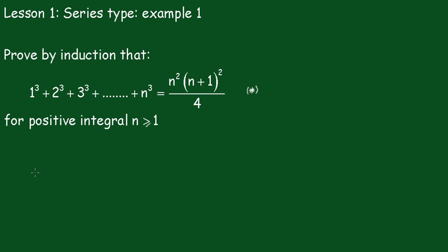Lesson 1. Series type. Example 1. We have to prove by induction that 1 cubed plus 2 cubed plus 3 cubed plus all up to n cubed is equal to n squared times n plus 1 all squared over 4, for positive integral n greater than or equal to 1.